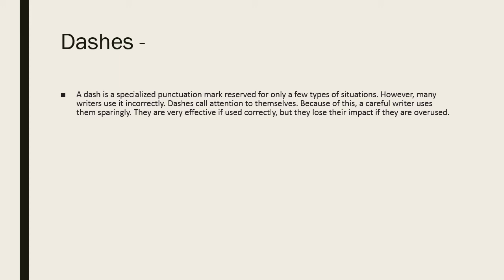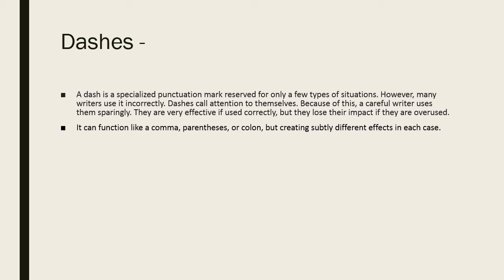Now let's turn to another punctuation mark used to show a break or change in meaning: the dash. A dash is a specialized punctuation mark reserved for only a few situations, but it is often used incorrectly, just like the semicolon. Dashes call attention to themselves, so we need to use them sparingly. They are very effective when used correctly, but lose their impact if overused. A dash can function like a comma, bracket, parenthesis, or colon, but creates subtly different effects in each case.